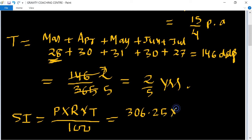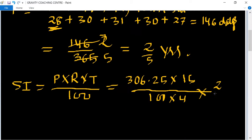Principal equals 306.25 multiply, rate of interest equals 15 upon 4, and time equals 2 by 5.